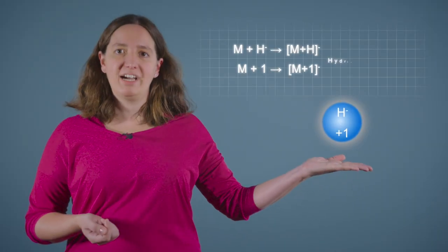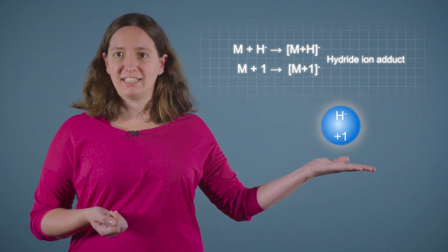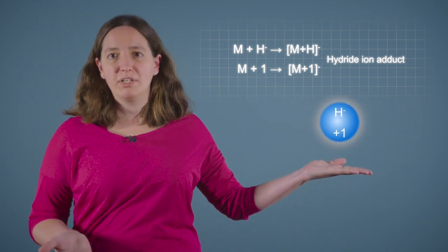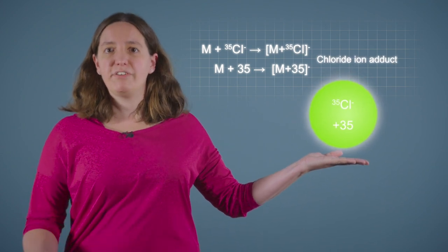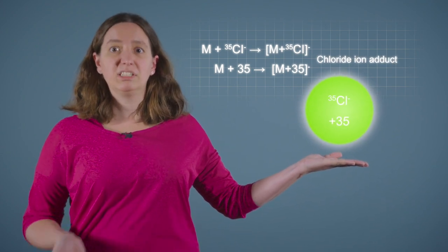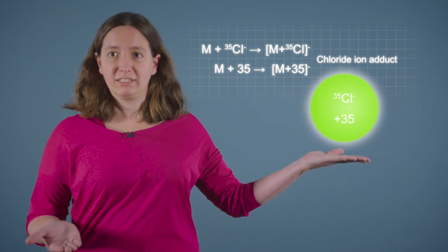Typical anions that can form adduct ions in negative mode ESI include hydride ions that make singly charged adduct ions one mass unit heavier than the analyte molecules, and chloride ions that make singly charged adduct ions 35 or 37 mass units heavier than the analyte molecules, depending on which isotope is forming the adduct ion.